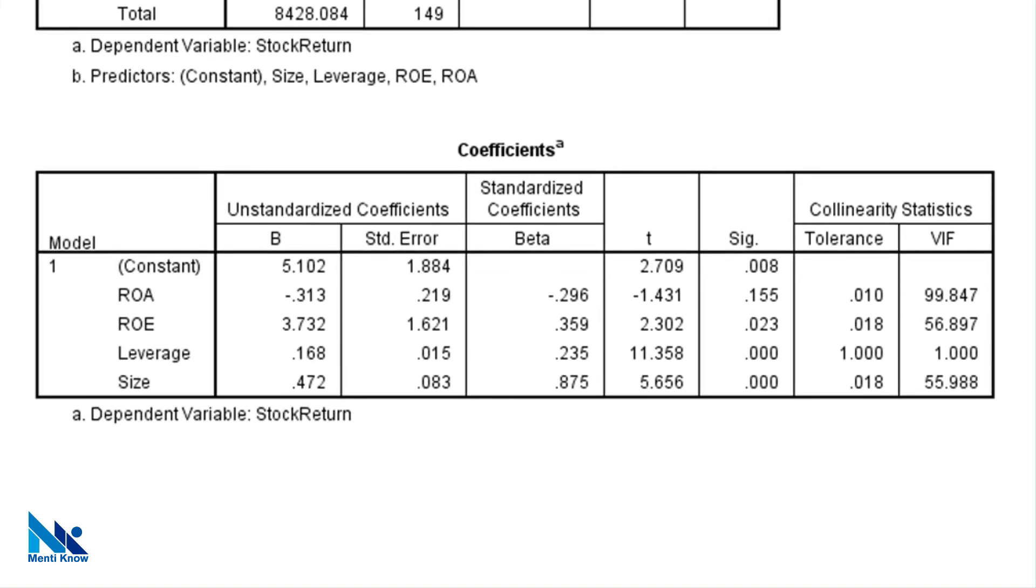Also we can see that out of 4 coefficients, 3 are statistically significant. Even though the coefficient is not significant, just have a look at the coefficient for ROA. It is negative. It is not very practical to have a negative coefficient for ROA in this model. ROA being statistically not significant in predicting stock return also confuses me.